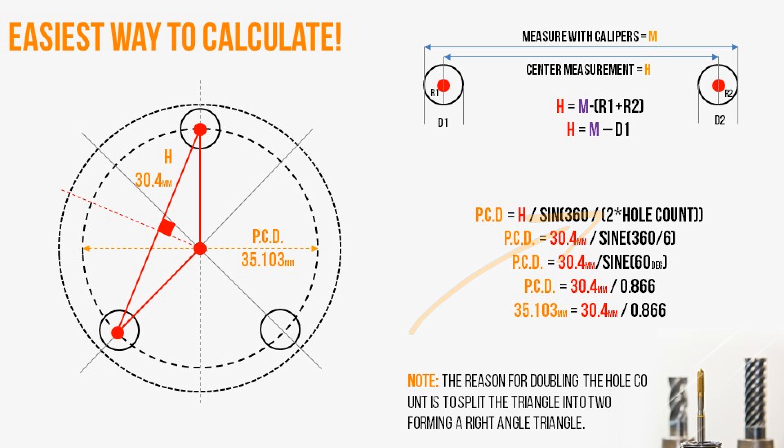As we look at the formula, the first thing we do is multiply the hole count by two. In fact, since we have three holes, we'll multiply it by two, come up with six, divide that by 360, and that basically splits our triangle in half, as you can see in the drawing. That's the important part.